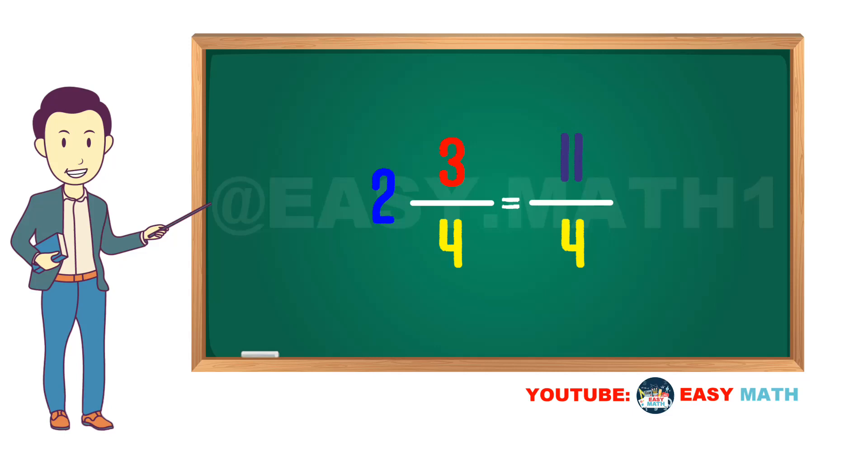Let's try another example. This time we're going to turn five and one third to an improper fraction. As I told you, first we have to multiply the denominator by the whole number. So here we will multiply 3 times 5, it's equal to 15.